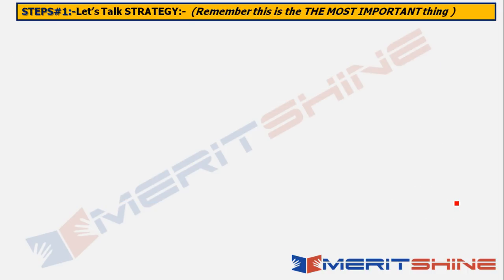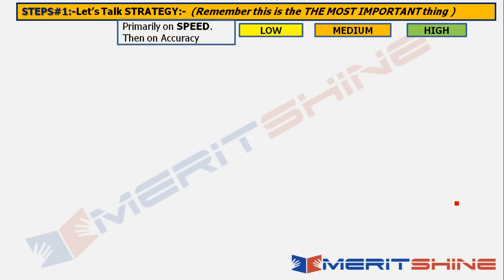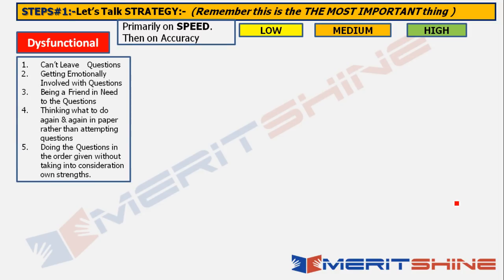Step one: strategy means ordering of questions. Just like Prelims, questions are divided into low, medium, and high based on speed and accuracy. Speed is the first factor — the time you take to do those kinds of questions — and then accuracy. Before moving on, let me list the dysfunctional characteristics that often seep in when we approach a competitive exam paper.